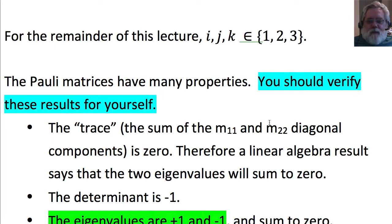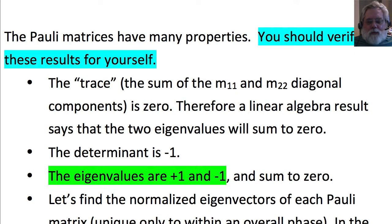The trace of a matrix is the sum of the elements on the main diagonal. For a two-by-two matrix that is m11 plus m22, and it is zero for all three Pauli matrices. A result in linear algebra says therefore the two eigenvalues of each Pauli matrix sum to zero. The determinant of each Pauli matrix is minus one. The eigenvalues are plus one and minus one — they sum to zero, consistent with the trace — and you can verify this using the eigenvalue formula.